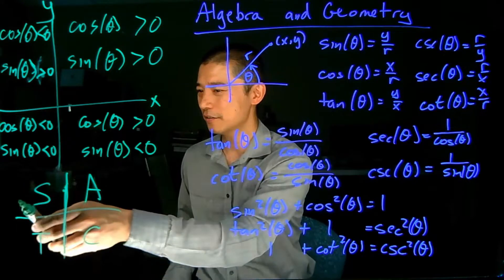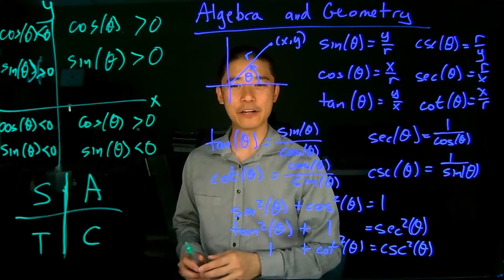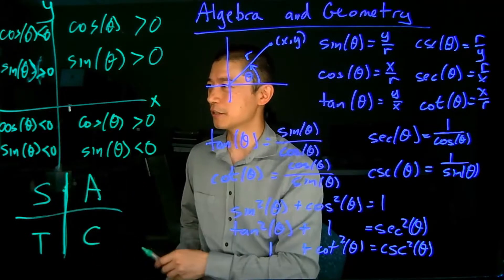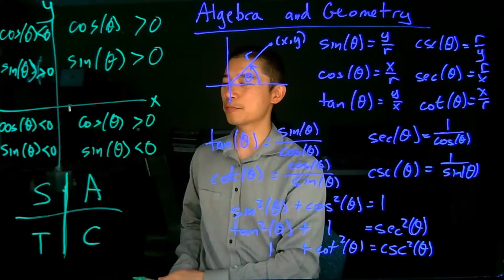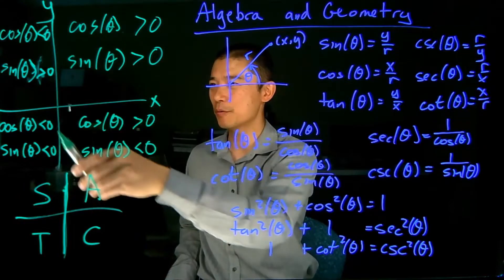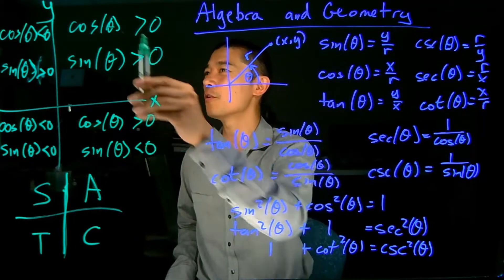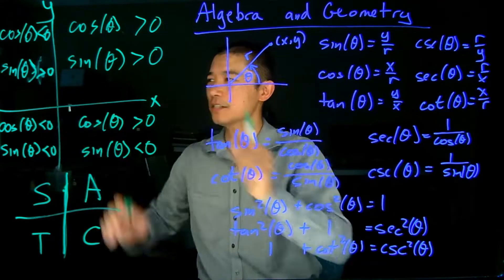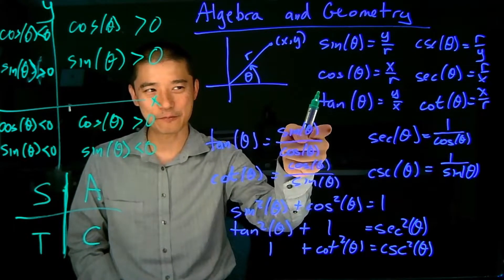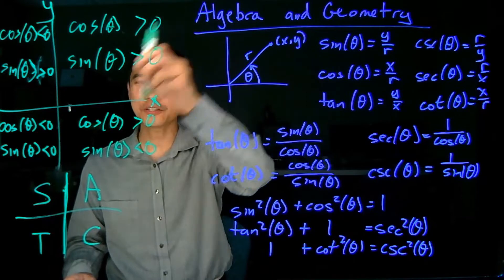So tangent and cosine are negative in quadrant two, and sine and tangent are negative in quadrant four. With the reciprocals, you can find whether those are positive or negative based on the fact that when you take the reciprocal, the sign doesn't change. So if sine is positive, cosecant is positive; if tangent is positive, cotangent is positive. All of this relates back to the geometry of the coordinate plane — the quadrants are determined by whether x and y are positive or negative, which corresponds to cosine and sine being positive and negative.